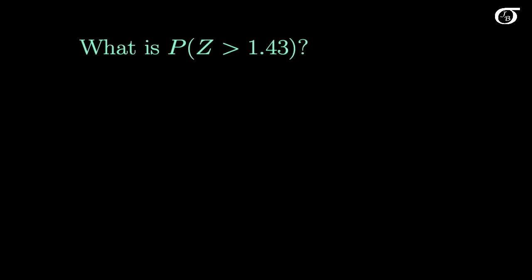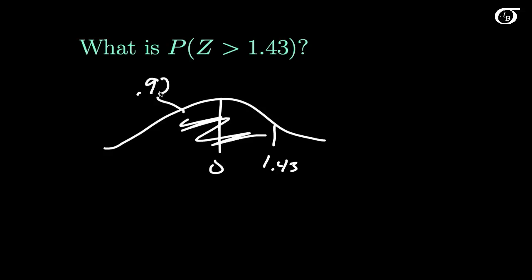What is the probability Z is greater than 1.43? Well, let's draw that picture again. Here's 0, here's 1.43, and we found that this thing is 0.9236. The area under the entire curve is equal to 1, and so this area that we need is 1 minus 0.9236, which is equal to 0.0764.